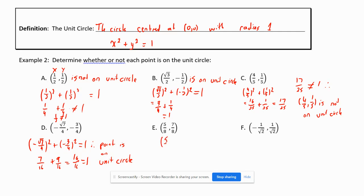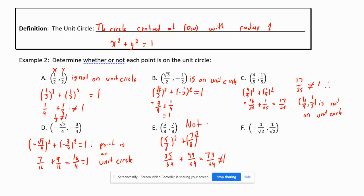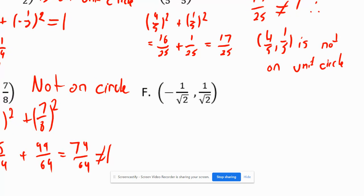For point (5/8, 7/8): (5/8)² + (7/8)² = 25/64 + 49/64 = 74/64, which is not equal to 1. Therefore this point is not on the unit circle.